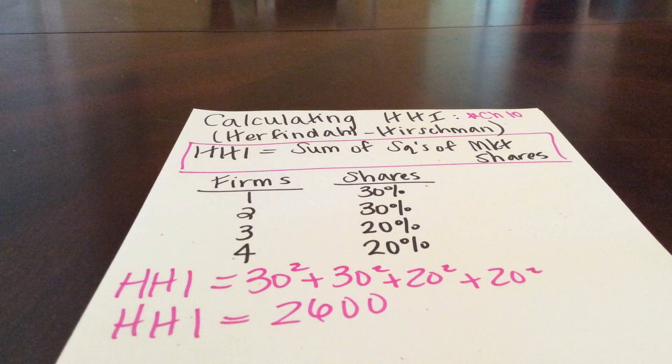If instead the HHI is increasing, then we know that the number of firms is probably decreasing, and also the disparity in size between those firms is increasing.